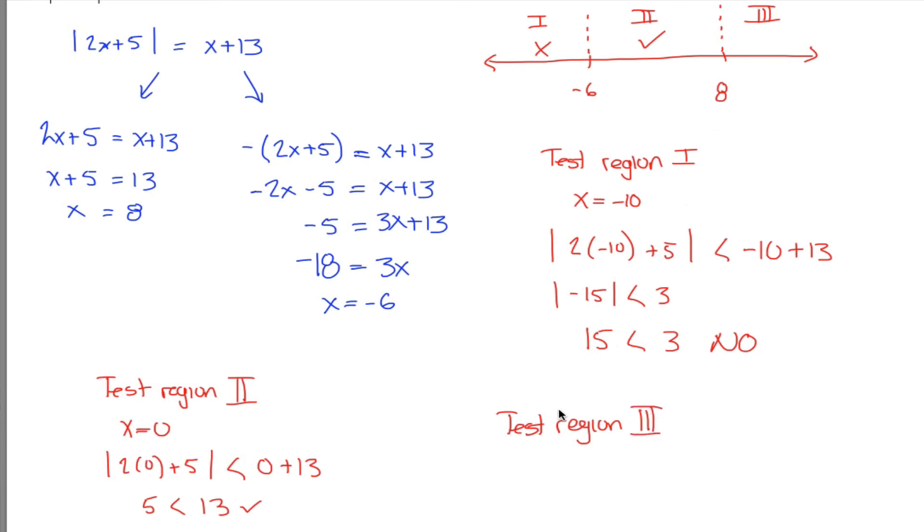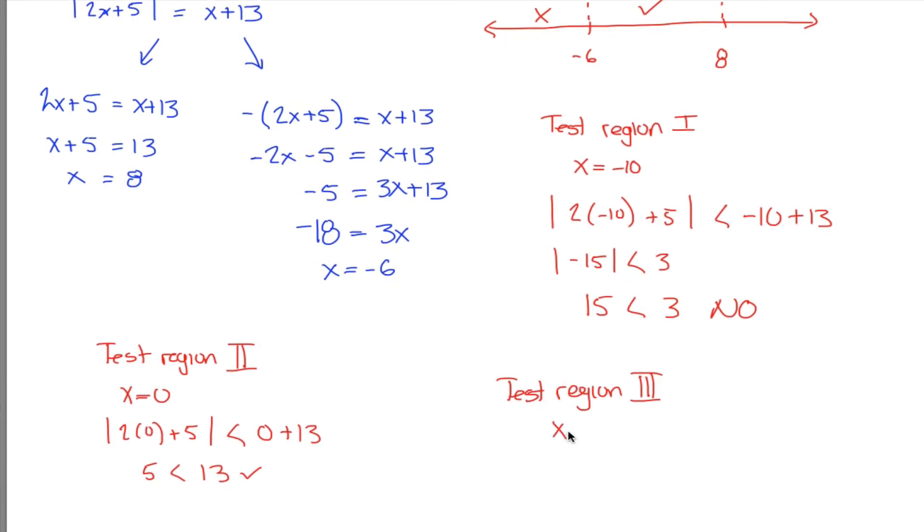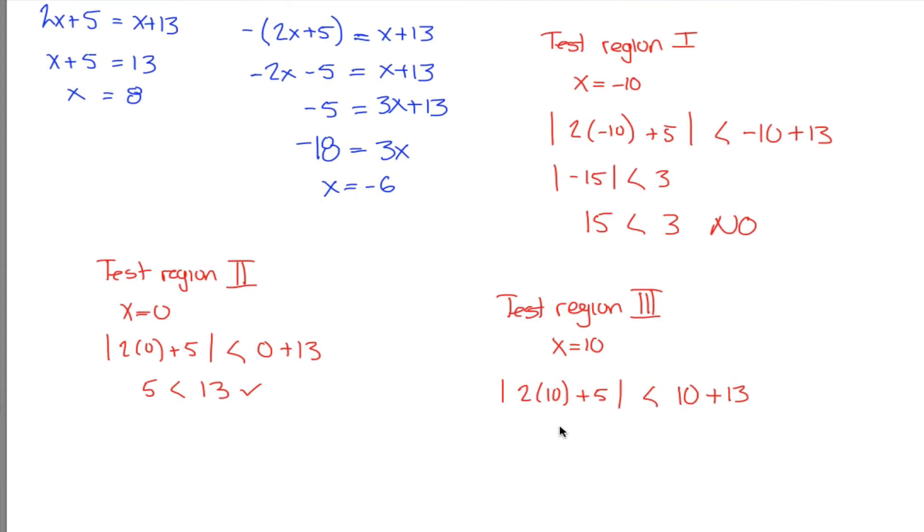Region 3 is all the numbers greater than 8. 10 is a number that's greater than 8. Maybe I'll arbitrarily choose that one. Now, I got to figure out, is the absolute value of 2 times 10 plus 5 less than 10 plus 13? That's going to be close. Let's see. 2 times 10 is 20. 20 plus 5 is 25 and the absolute value of 25 is 25.